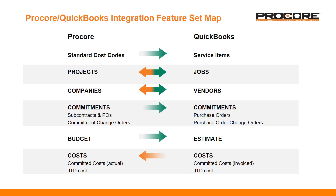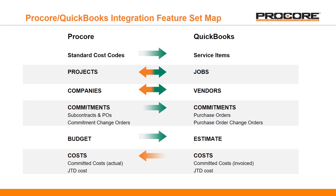Once your standard cost codes are synced, you can start exporting any new projects you create in Procore to QuickBooks. This creates the job record in QuickBooks and syncs it with the project in Procore. You may notice that this row has arrows going in both directions, meaning you are also able to import jobs that you may have set up in QuickBooks, creating new Procore projects based on the job data in QuickBooks.